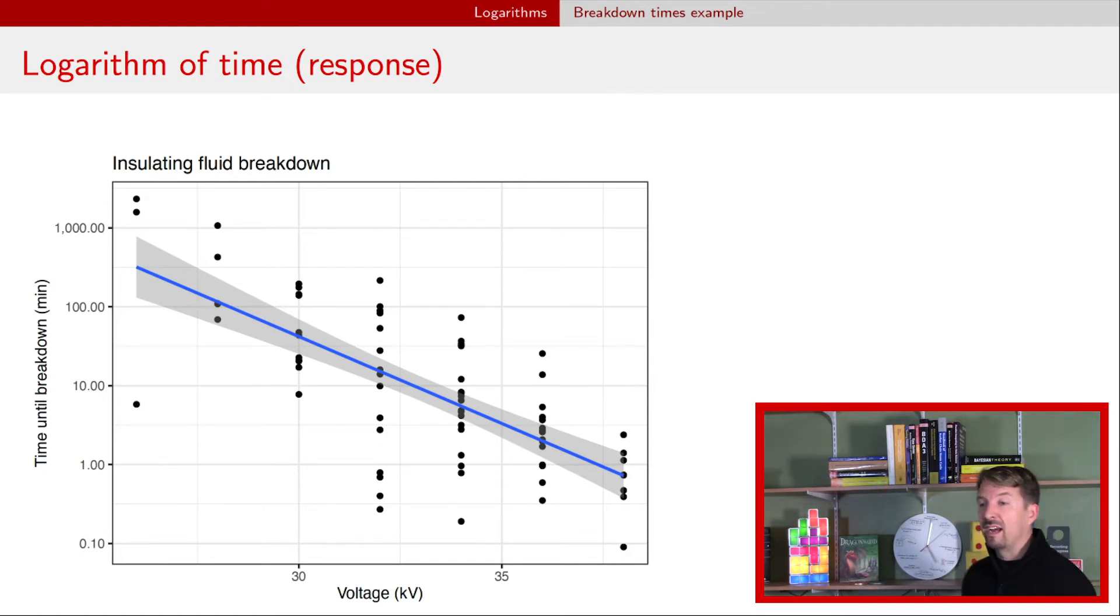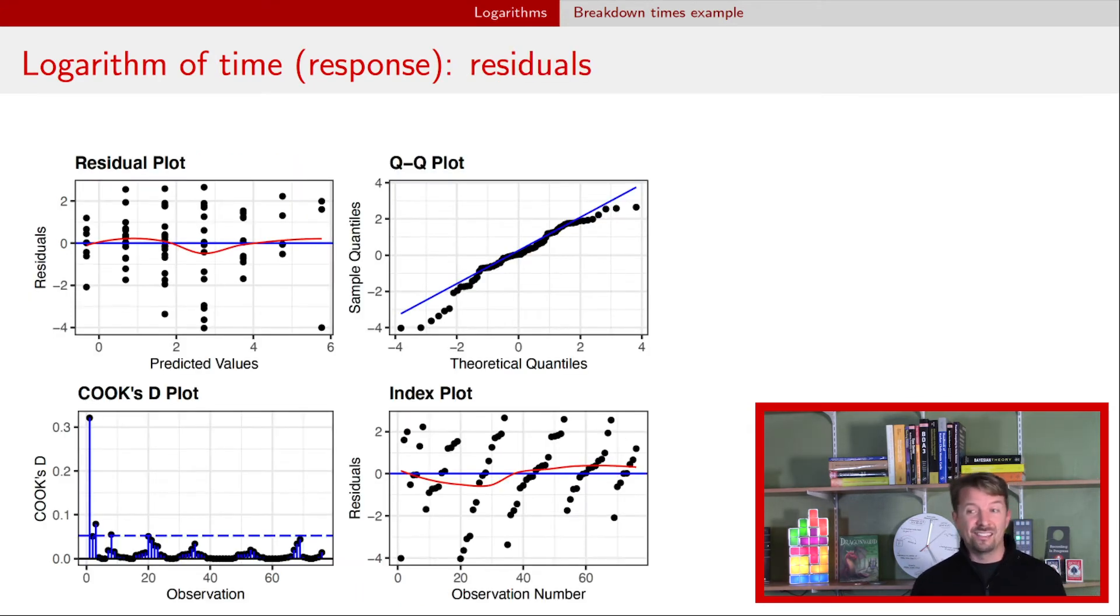And now if we take a look at this regression plot, now things look pretty reasonable. The data, we see sort of even spread all along that line. We see certainly more observations for later voltages than we saw for earlier voltages, perhaps. I probably should have jittered these values so you can make sure that there's no overlaps there. But overall, a much better fit than we had before. If we take a look at our diagnostic plots, the diagnostic plots look much better.